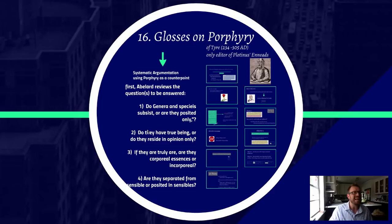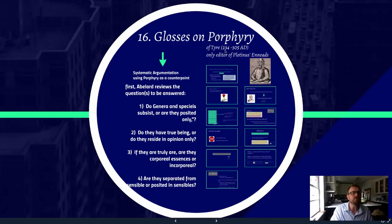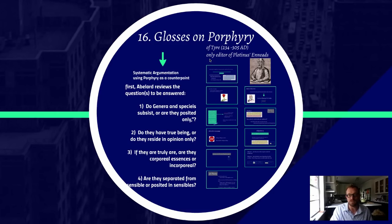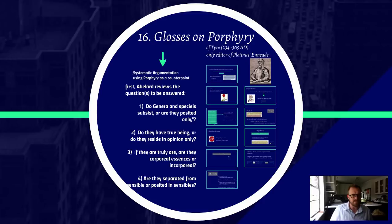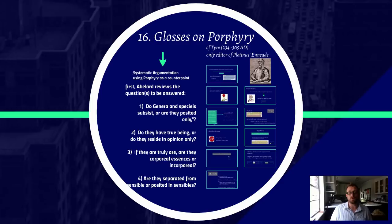We're going to take a look at an excerpt from the Glosses on Porphyry. We're talking about Porphyry of Tyre, who lived from 234 to 305 AD and was a student of Plotinus — the only person who edited the only known source of Plotinus's written works. As early as Porphyry, we see the question of universals being raised. Abelard is also well aware of what Aristotle and Plato argue about this problem and is not writing in a vacuum.